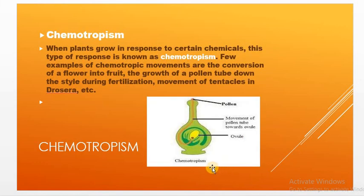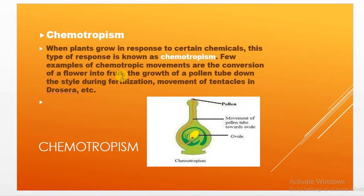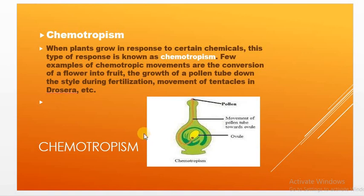Chemotropism — chemo means chemical. When plants grow in response to certain chemicals, this is known as chemotropism. The movement of plant parts toward a chemical stimulus is called chemotropism. Examples include the conversion of a flower into a fruit, and the development of a pollen tube after pollen sits on the stigma. The movement of tentacles and development of the pollen tube during fertilization are all examples of chemotropism.